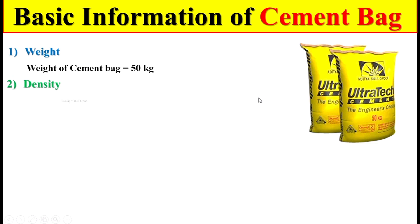Remember, the density of cement is 1440 kg per cubic meter. It means that if we have a volume of one cubic meter, the weight of that cement will be 1440 kg.